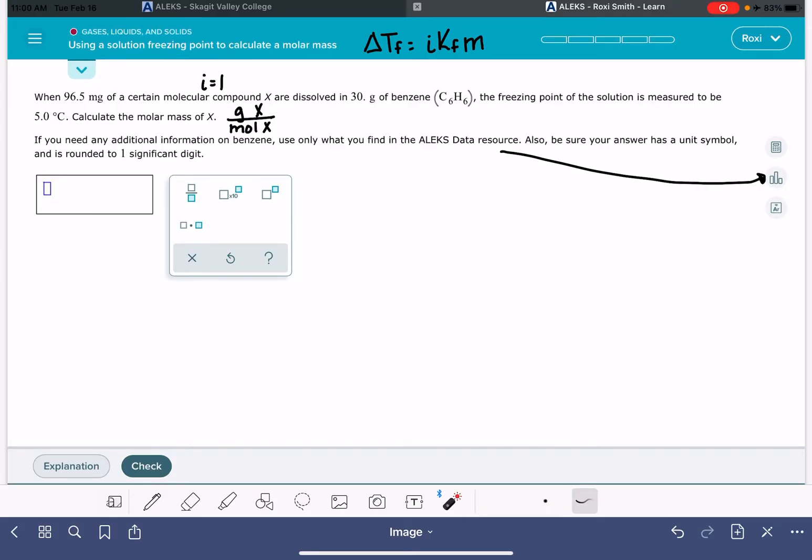Let's take a look at what we've got. We need delta Tf. We know the freezing point of the solution, but that's not what we plug in here. The change in the freezing point is not 5 degrees C. We need to figure out what the change in the freezing point is. And so in order to do that, we need to know what the actual freezing point of benzene is. That's where this data is going to come in handy.